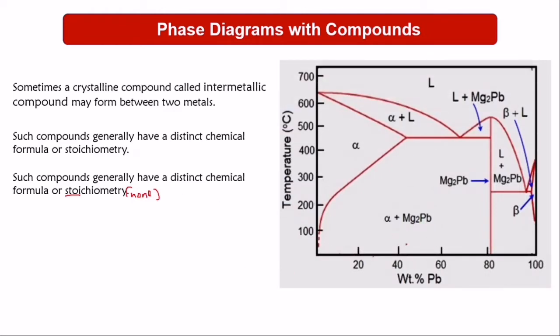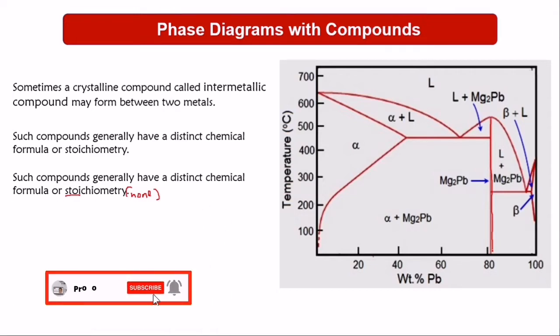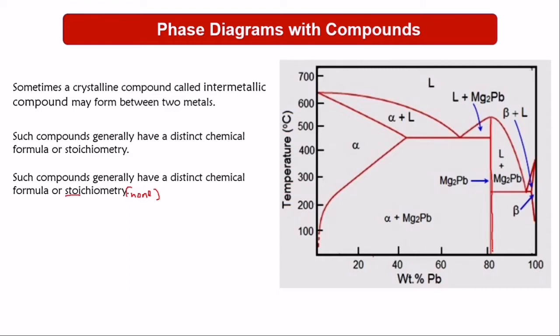We're going to look at the magnesium-lead phase diagram and identify the intermetallic compound. The difference between stoichiometric and non-stoichiometric intermetallic compounds is: stoichiometric compounds appear as just a line on the phase diagram — they have a fixed composition with no range. Non-stoichiometric compounds appear as a range, with composition between certain numbers or weight percentages.